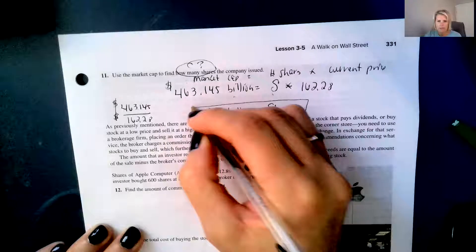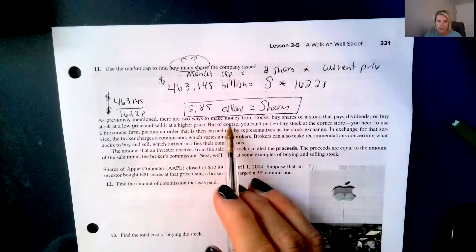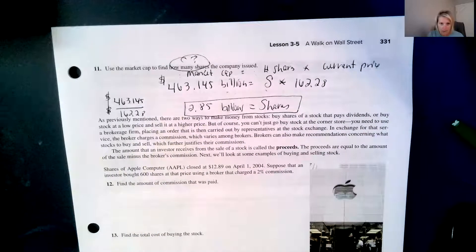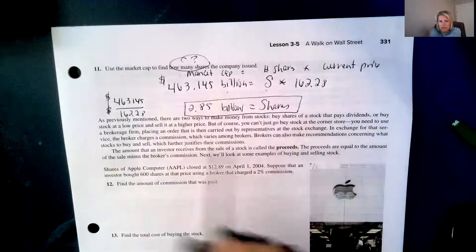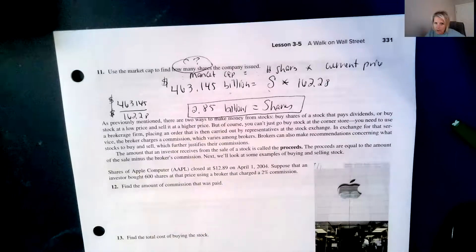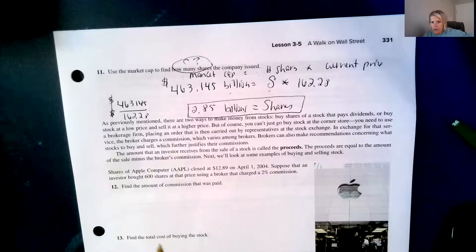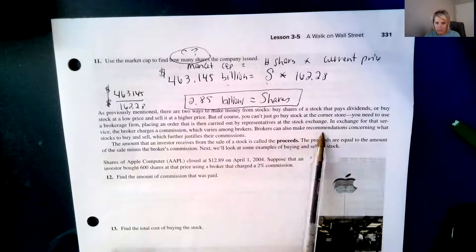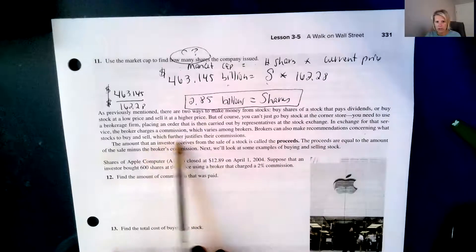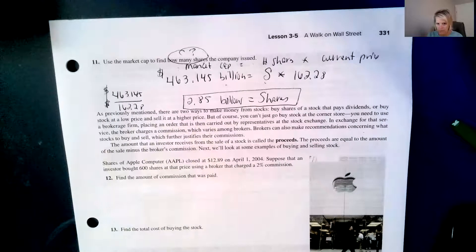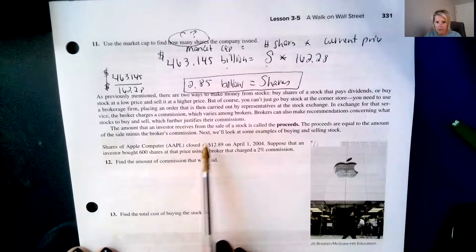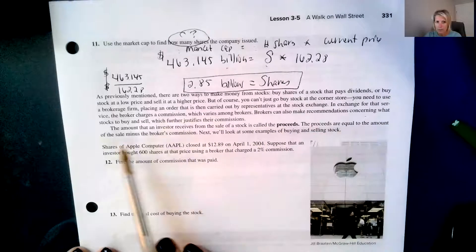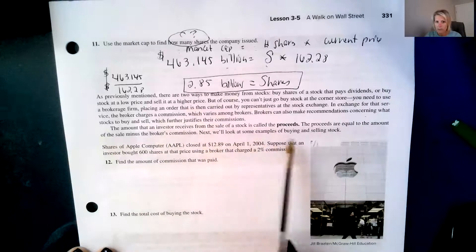As previously mentioned, there are two ways to make money from stocks. Buy shares of a stock that pays dividends or buy stock at a low price and sell it at a higher price. But of course, you can't just go buy stock at the corner store. You need to use a brokerage firm placing an order that is then carried out by representatives at the stock exchange. In exchange for that service, the broker charges a commission. There are apps, though, now that are available where they don't charge commission. Or they might charge commission later on, or it might be a monthly fee. There's different ways. The amount that an investor receives from the sale of a stock is called the proceeds.